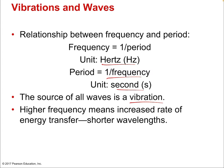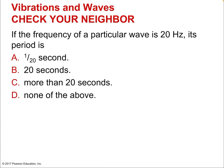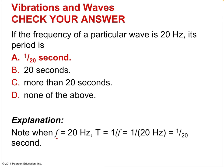Higher frequency means an increased rate of energy transfer and shorter wavelengths. As frequency increases, wavelength decreases — this is very clear for light, which has a fixed speed. In general, as frequency goes up, wavelength goes down. If the frequency of a particular wave is 20 hertz, its period is 1/20th of a second, because we just take the reciprocal of the frequency: 1 over 20 gives us 1/20th.